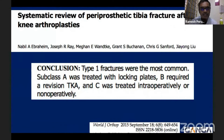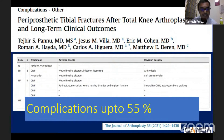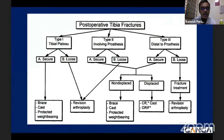In the systematic review of periprosthetic tibial plateau fractures, the incidence is extremely low — up to only 0.5 percent. Type 1 was the most common. Subtype A is treated with locking plate fixation; Subtype B requires revision; and Subtype C can often be treated non-operatively or by adding a plate. Complications following periprosthetic tibial plateau fractures occur in up to 50 percent of cases — most commonly delayed wound healing and wound healing complications. Revision rates are also high, and all these patients should be warned about this approximately one-in-two complication risk.